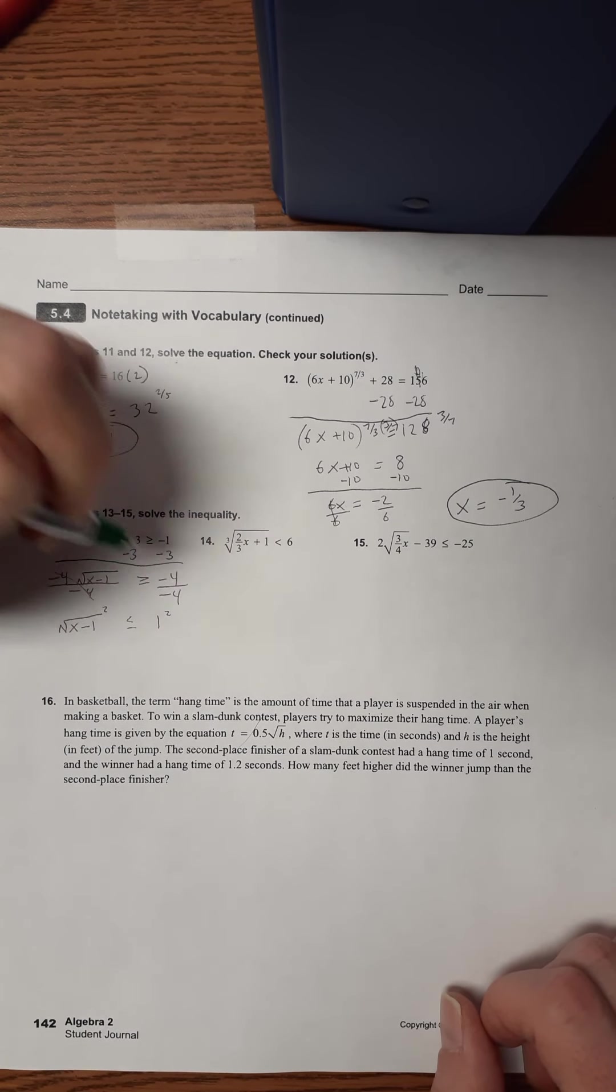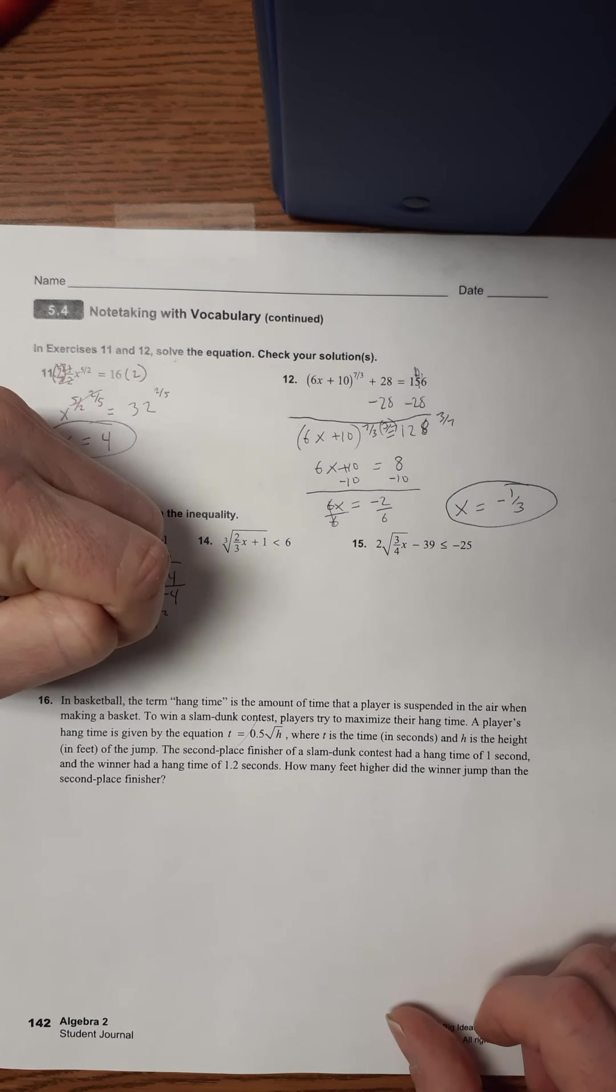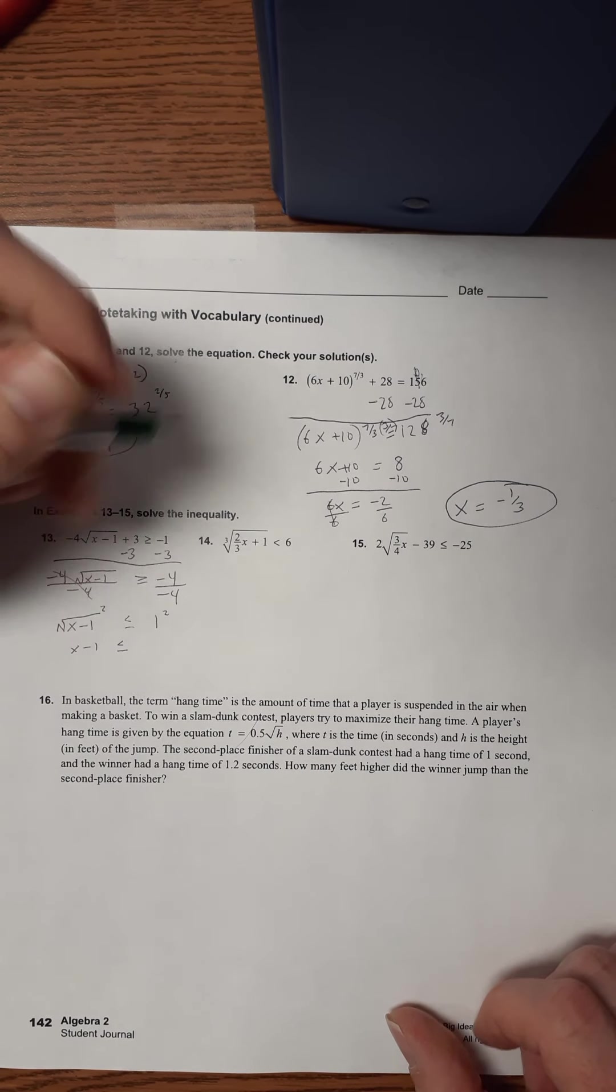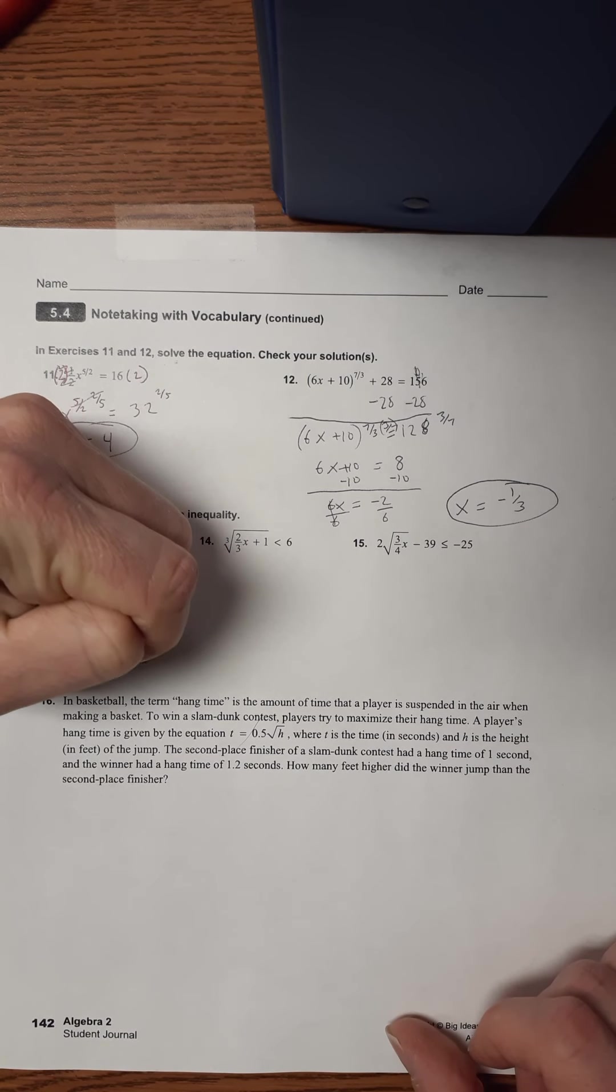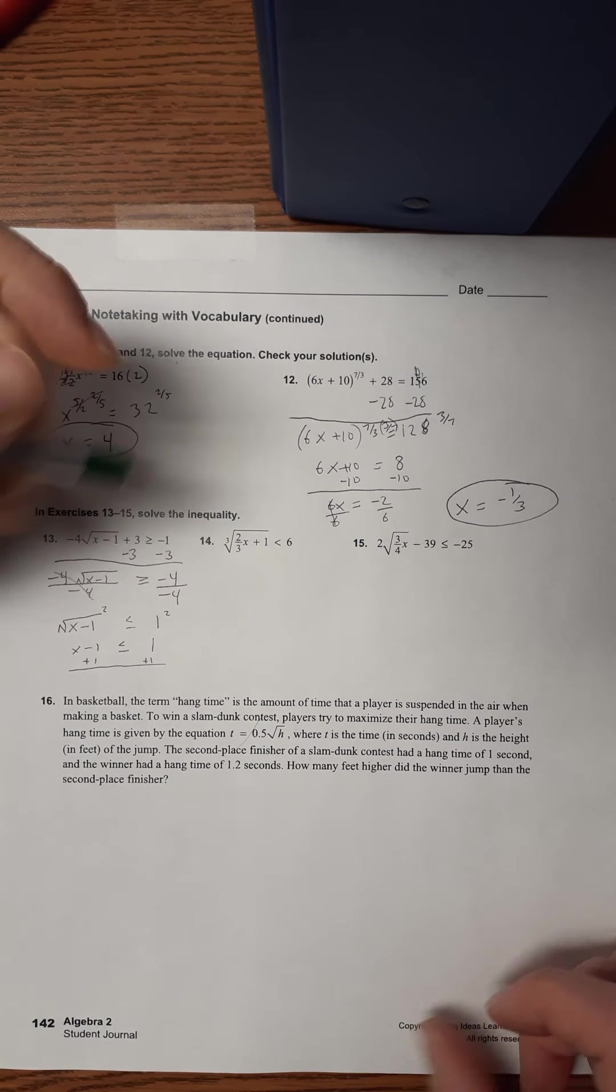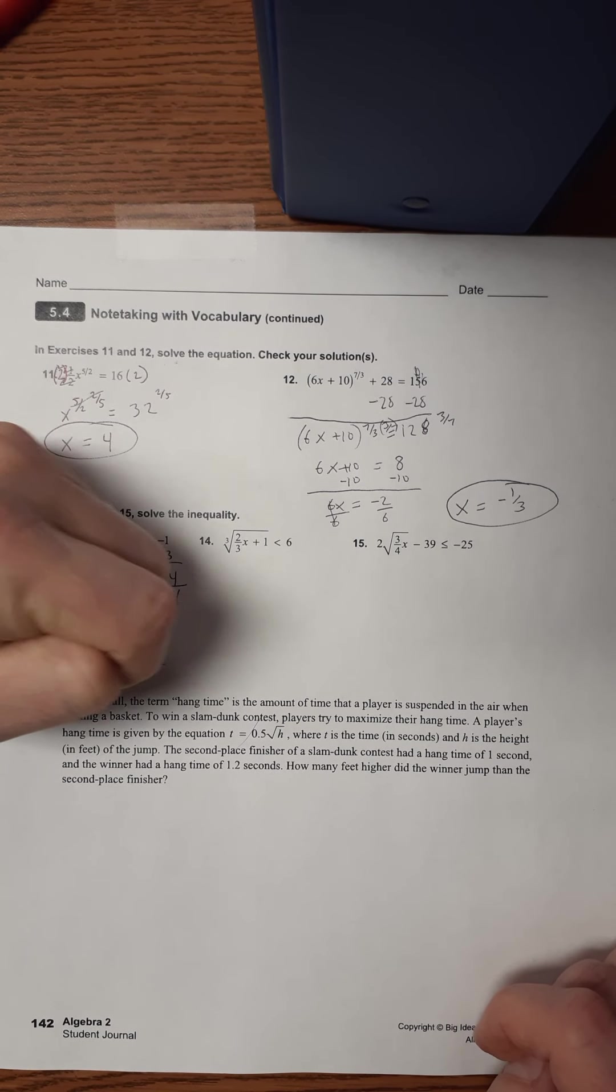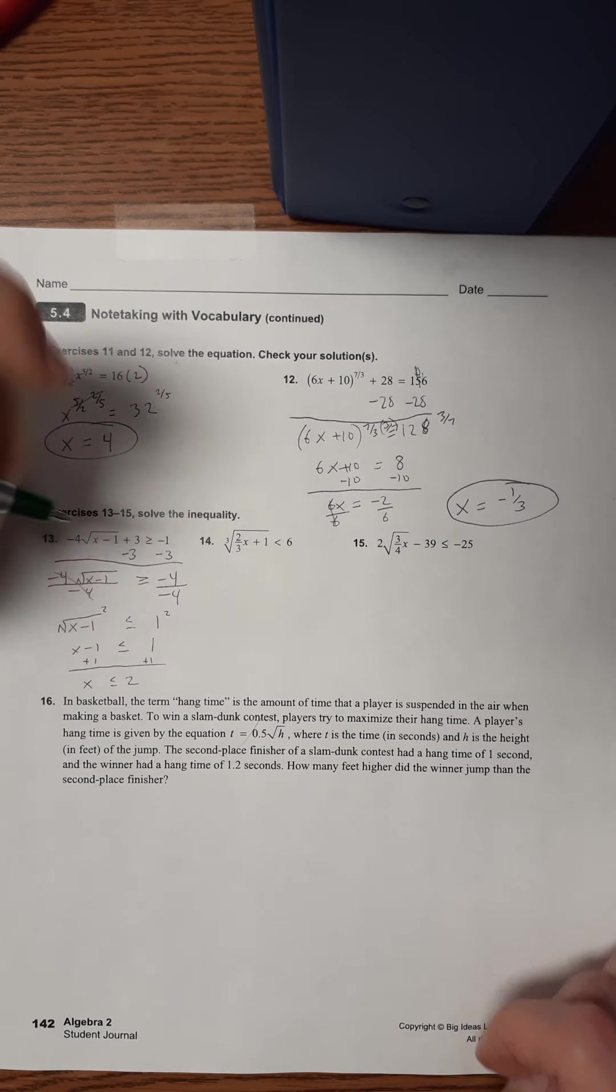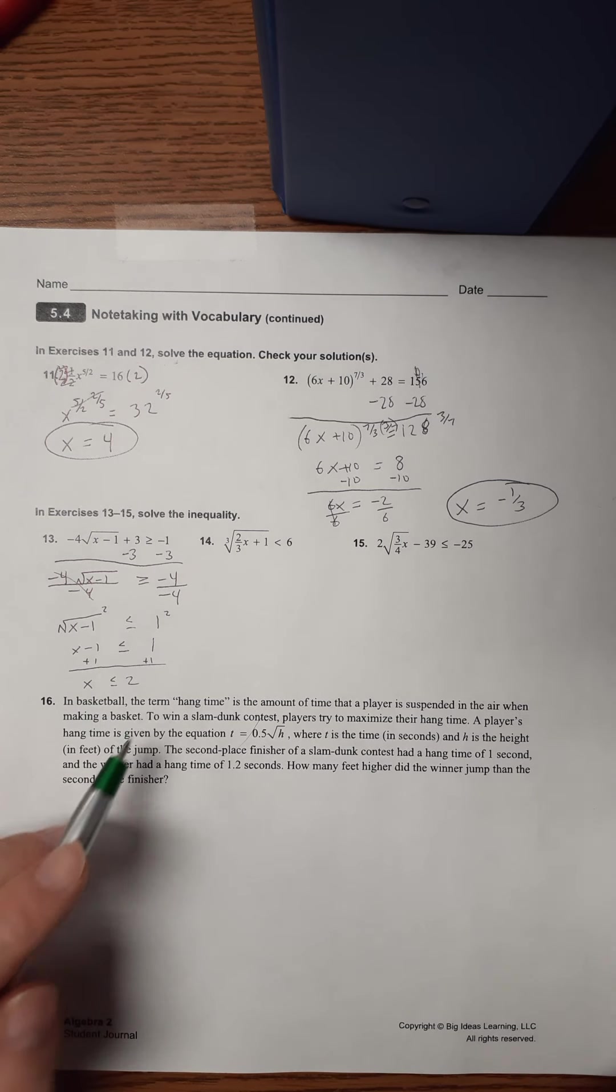Now we'll square each side. So X minus 1 is less than or equal to 1. Add 1 to each side. So now we're gonna have X is less than or equal to 2. With the inequalities, we now have X is less than or equal to 2. There's a weird thing you gotta do with inequalities.